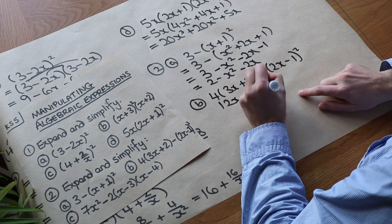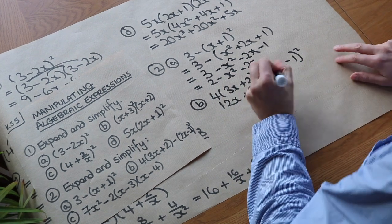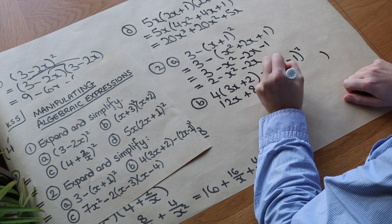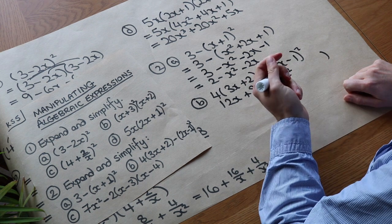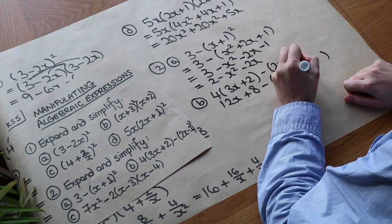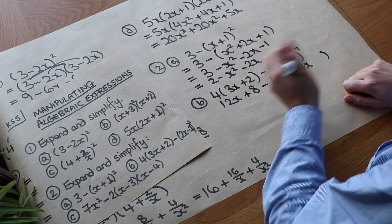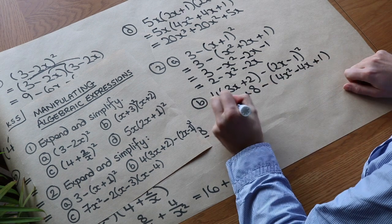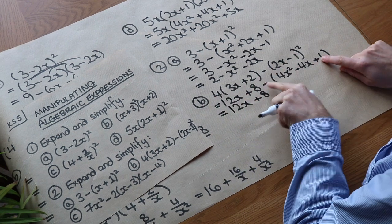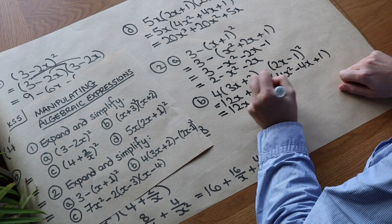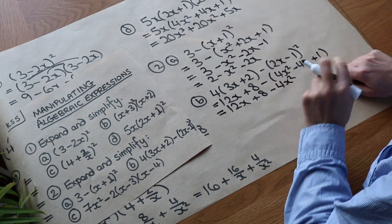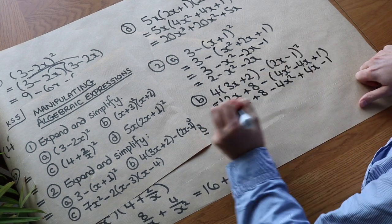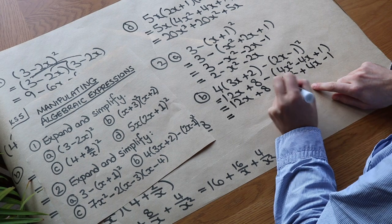For the next one, we have 12x + 8 minus (2x - 1)². Expand (2x - 1)² using the quick method: (2x)² = 4x², cross term is 2x times -1 doubled = -4x, and (-1)² = +1. Put this in a bracket: 12x + 8 - (4x² - 4x + 1). Each term in the bracket is negated: 12x + 8 - 4x² + 4x - 1, which gives -4x² + 16x + 7.